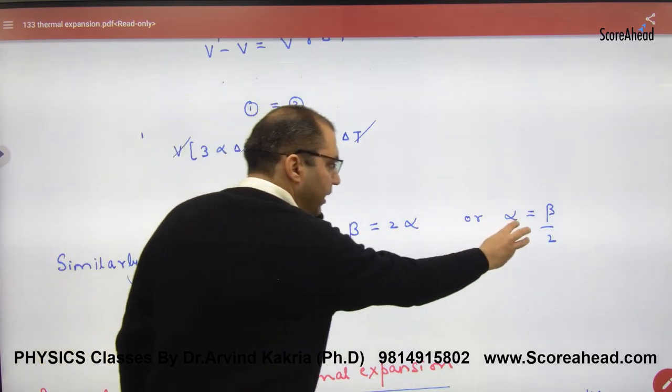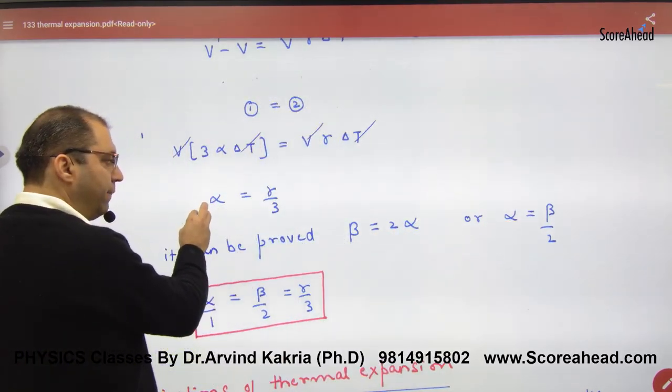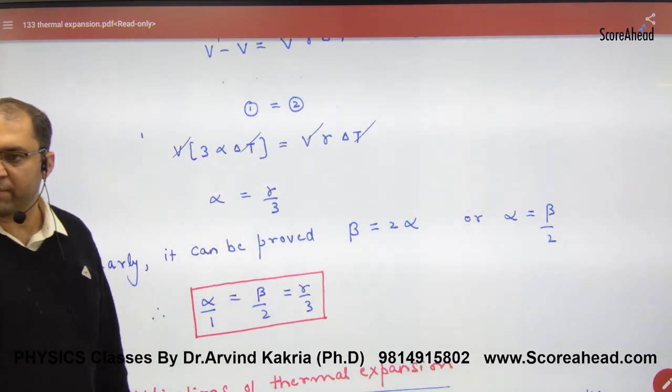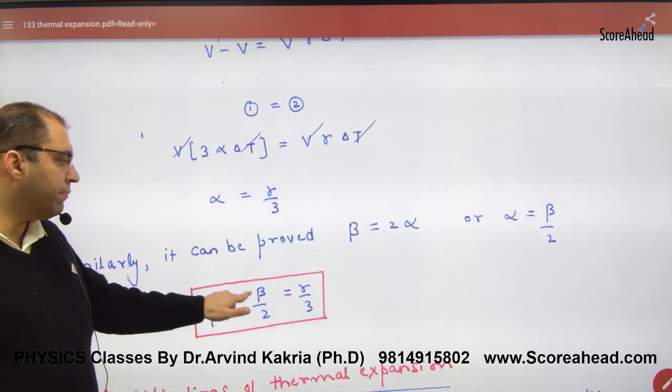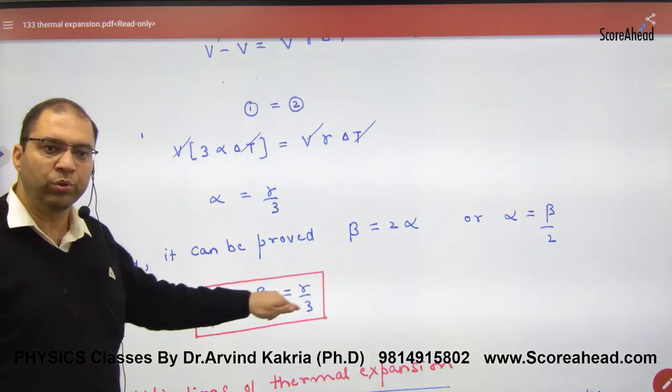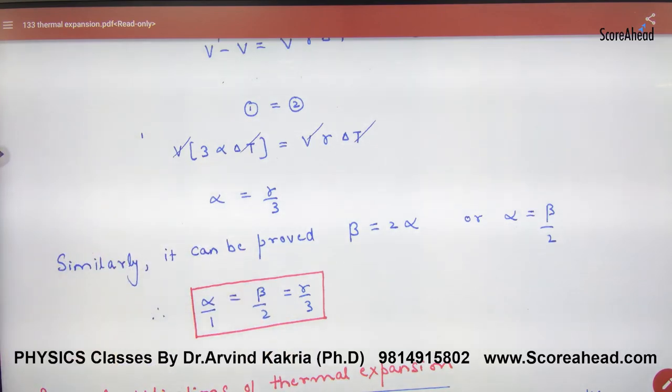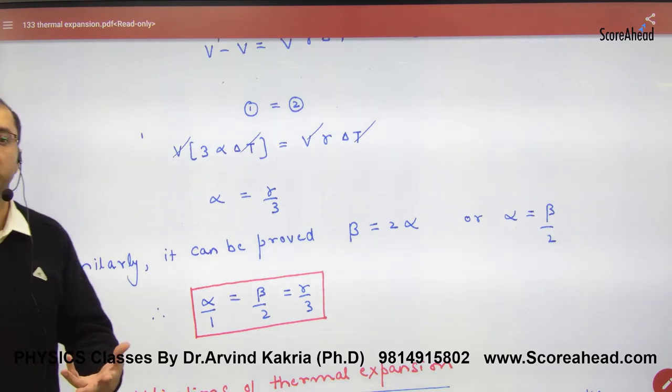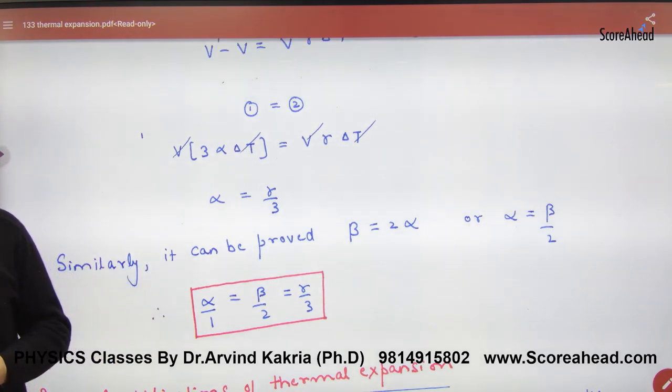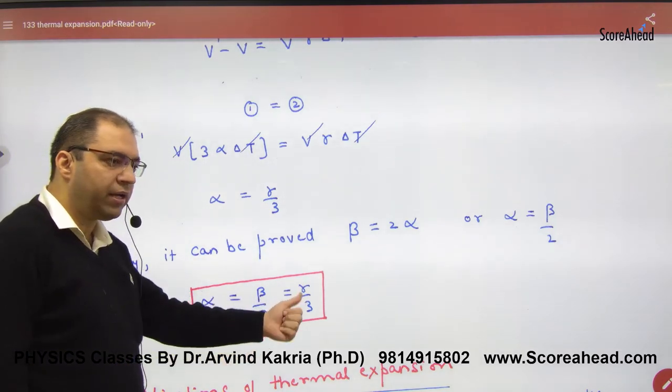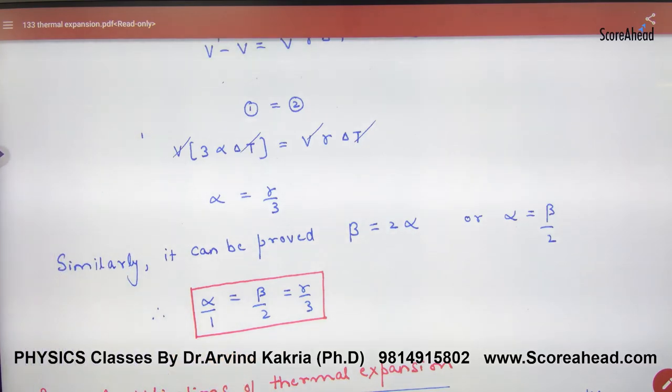So you combine this and this. What will happen? Alpha is equal to gamma by three. Alpha is equal to beta by two. Remembering a very easy way: alpha, beta, gamma; one, two, three. Alpha by one, beta by two, gamma by three. This can prove to you. And especially in numerical, there will be a question of volume. For volume you should have to know gamma. It will be known that one will give you alpha. That's why, so that you can get gamma here from three to alpha. So this will be a step extra.